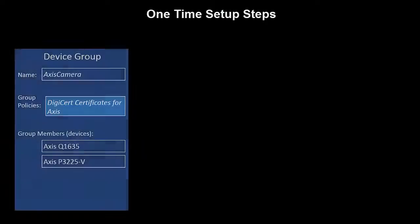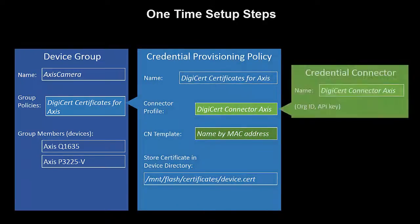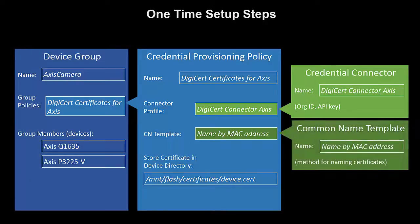To summarize, the one-time setup steps in Keyscaler are: define a group, define a credential policy for the group, define a credential connector to the service provider for the policy, and define a common name template for naming the certificates. Then, when a device is registered to the group, the associated policy triggers the certificate delivery.